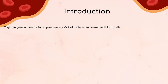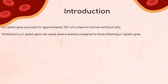Here's a cool fact: the alpha-2 globin gene accounts for approximately 75% of the alpha chains in normal red blood cells. So mutations in the alpha-2 globin gene can be more severe in causing anemia compared to those affecting the alpha-1 globin gene — it's all about the gene's power.